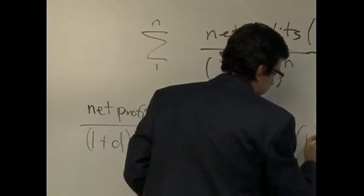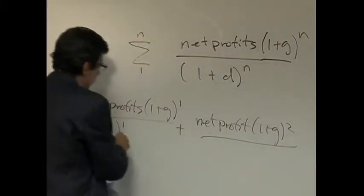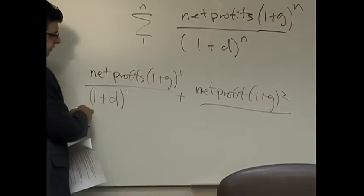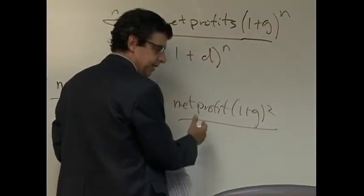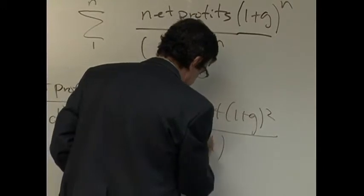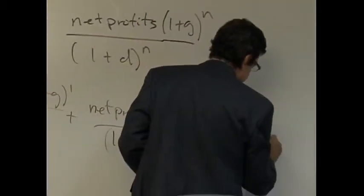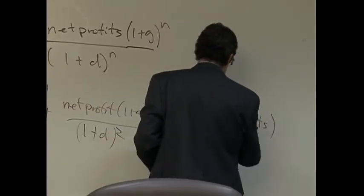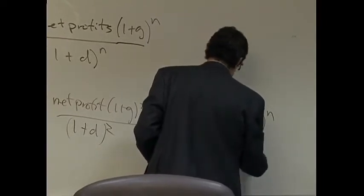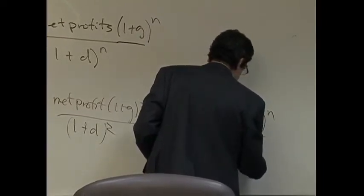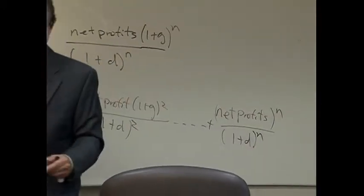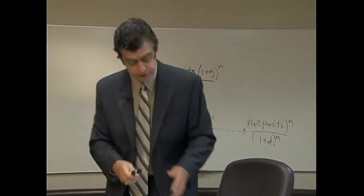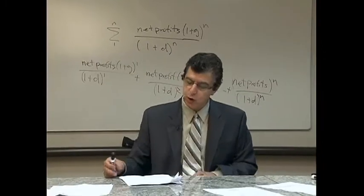Just to write it out a bit more. So what we're doing is discounting net profits in the first year plus the discounted net profits in the second year all the way up to net profits in year N. That's all this is. We are summing the loss of net profit, the present value of the loss of net profits from years one to N.